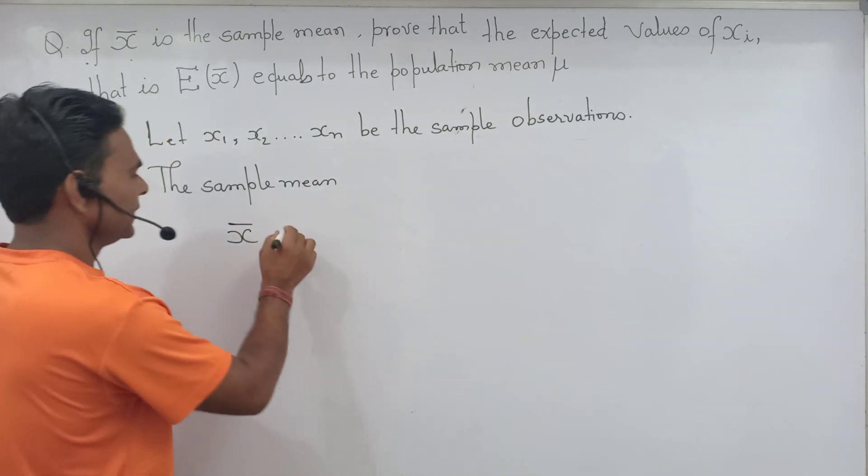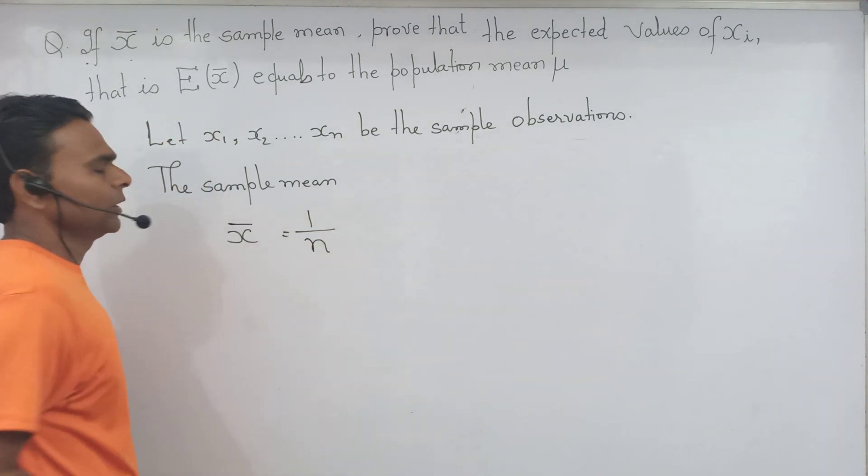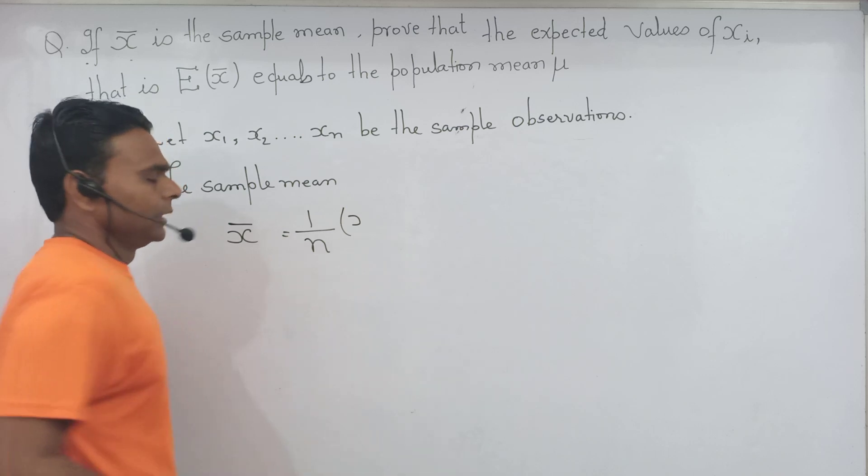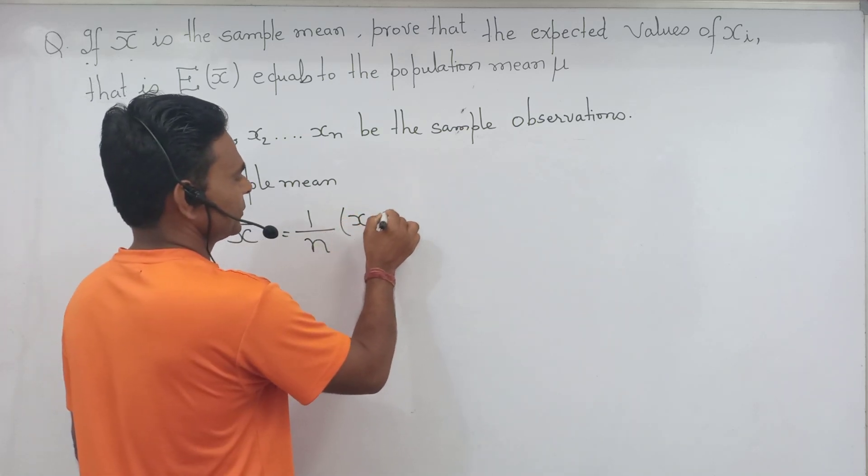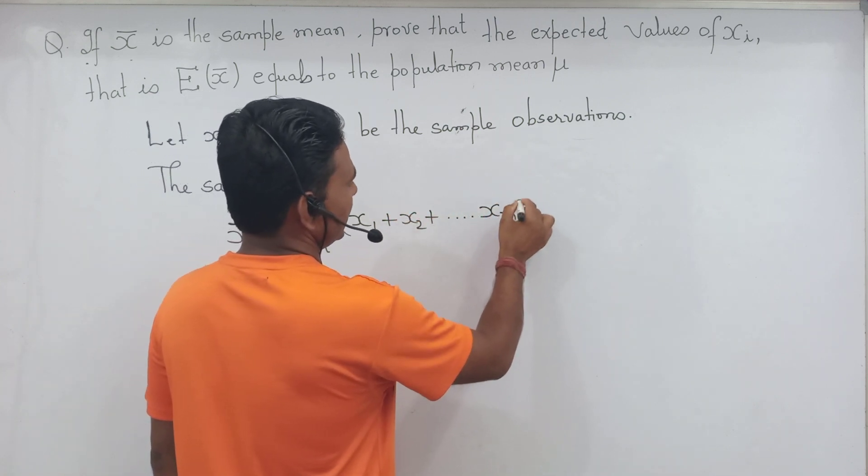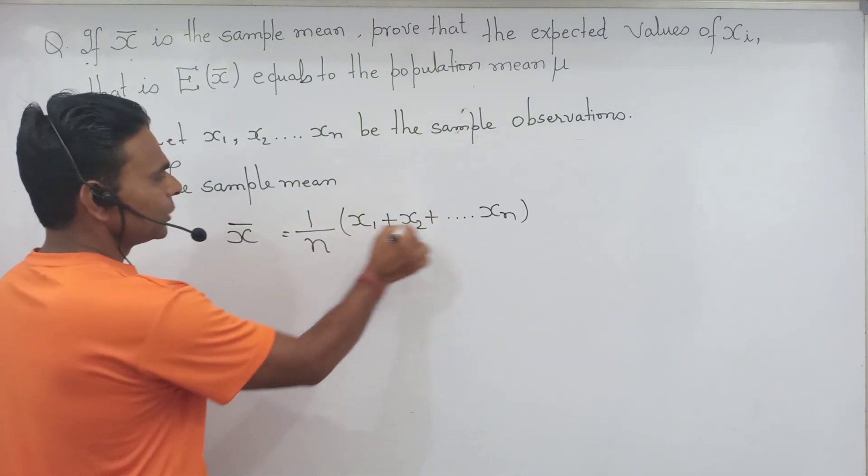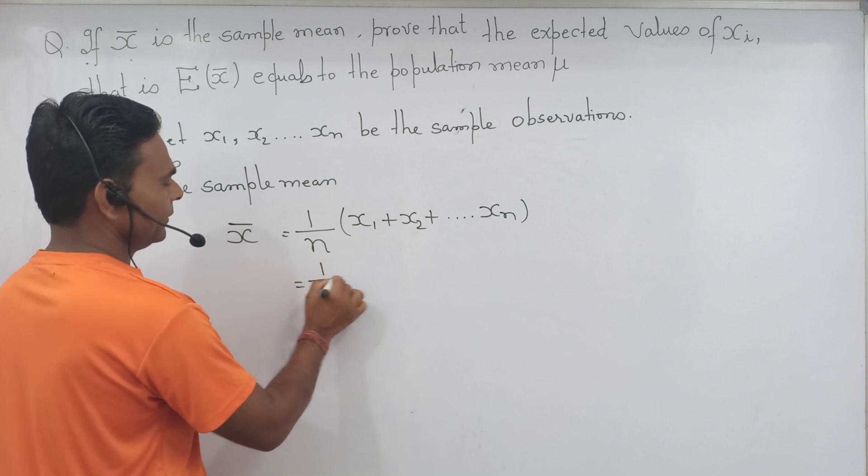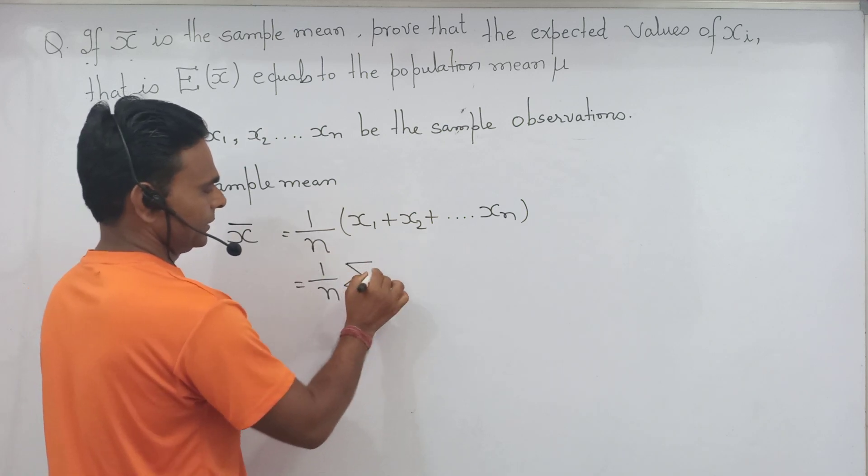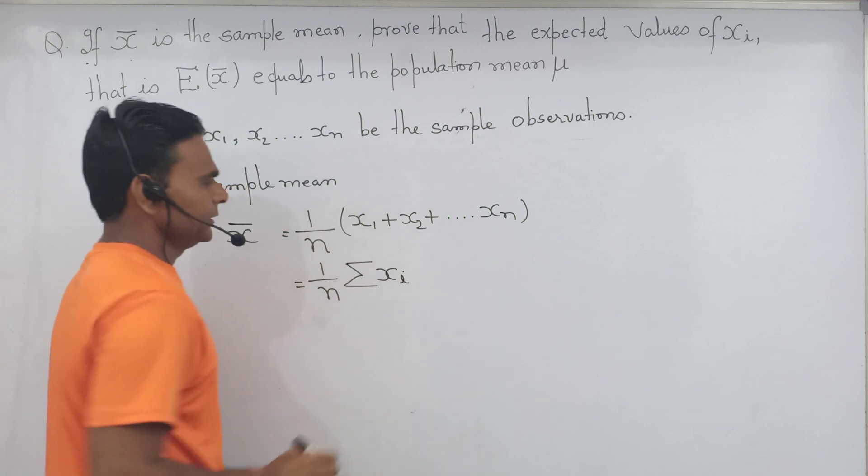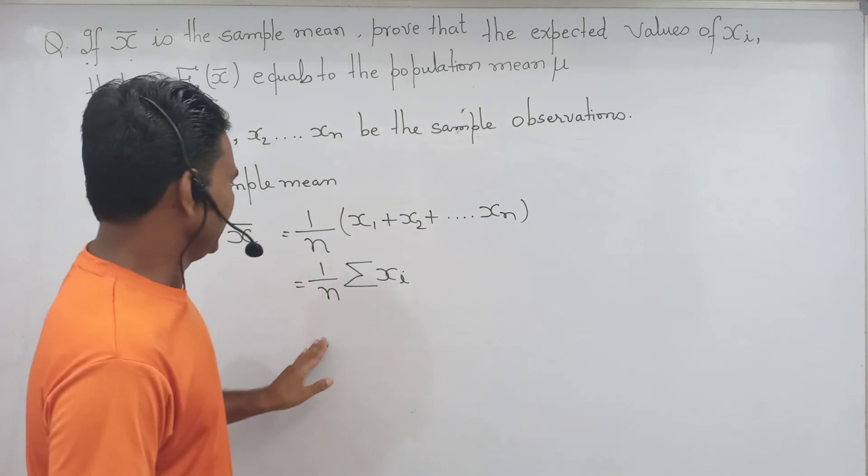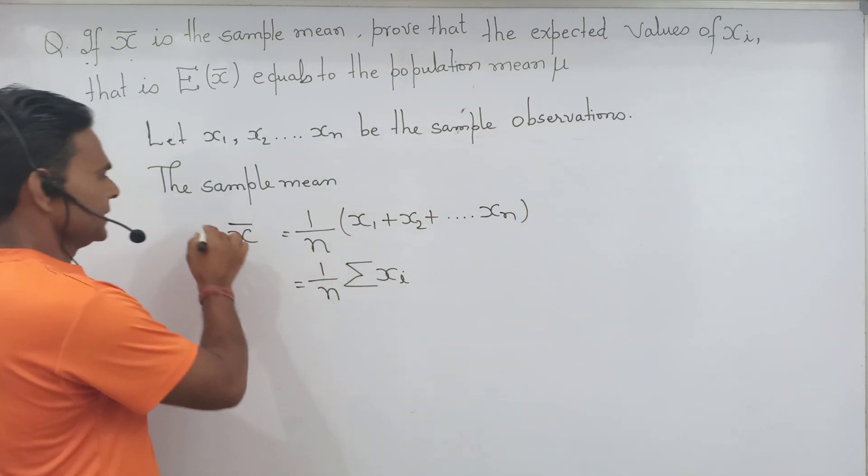That is 1 by n which is n indicates number of observation and what we can see summation of observation that is X_1 plus X_2 dot dot dot X_n. 1 by n and this we can write as sigma X_i.